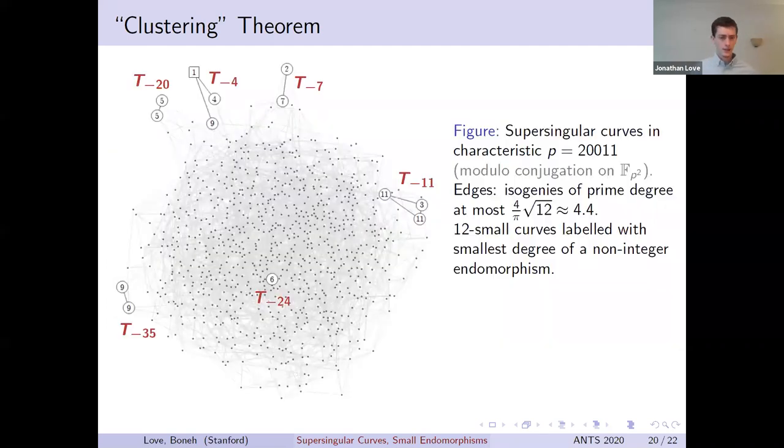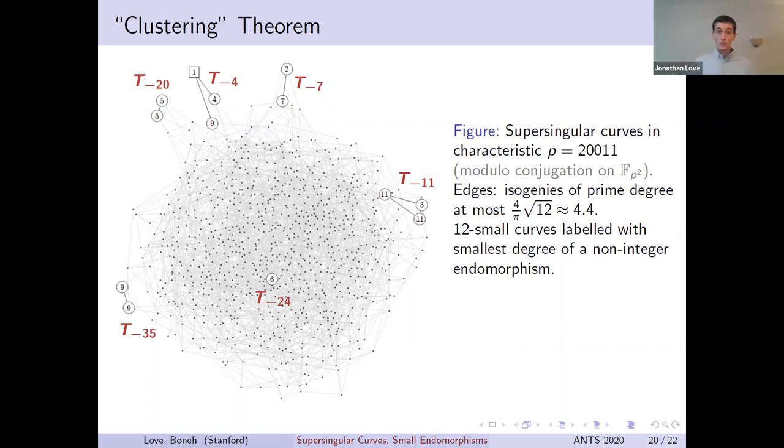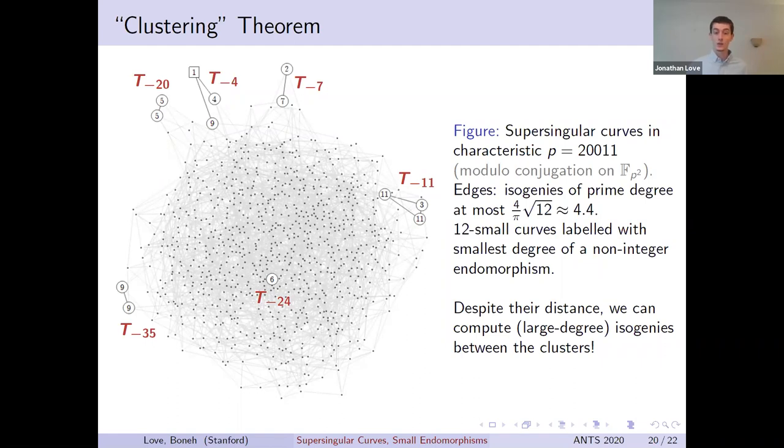So how do we visualize this theorem? Let's look at an example where we're looking at the set of 12-small supersingular curves in characteristic 20,011. This graph contains all supersingular curves, and I've connected 2 with an edge if there is any isogeny of degree 2 or 3 between them, as 2 and 3 are the primes less than 4 over π√12. As you can see, there is a clump for each fundamental discriminant, and it is not easy to find a path joining separate clumps. That said, we do know how to compute isogenies between any two m-small curves, even though these isogenies may have very, very large degree. These are isogenies that could not be reasonably found by an L-isogeny graph search.